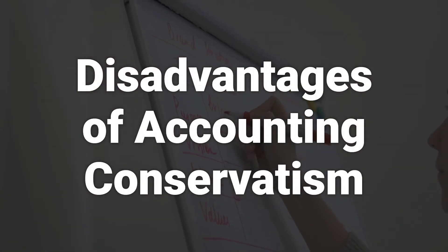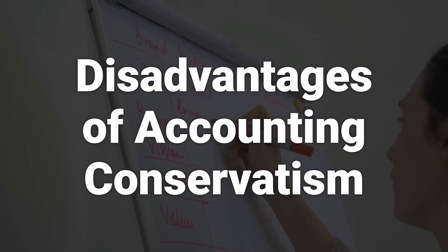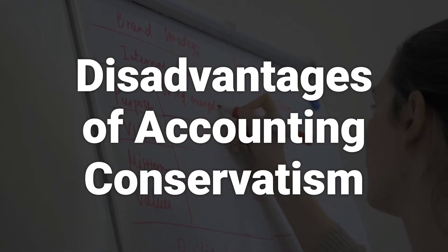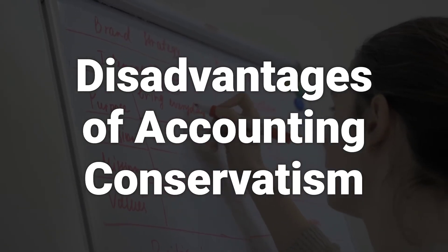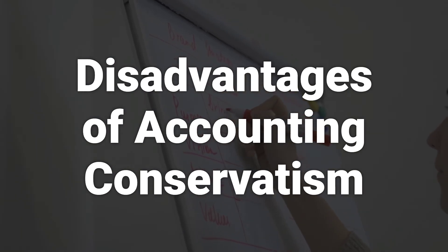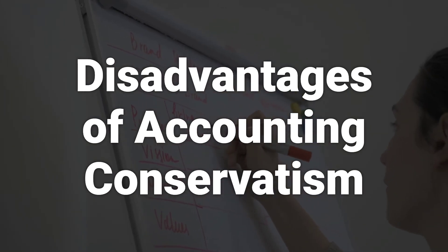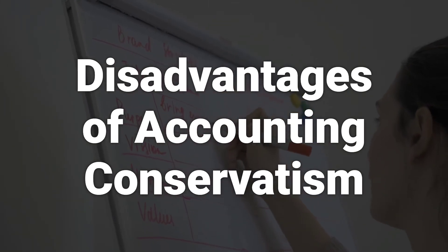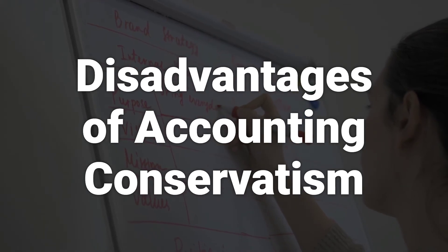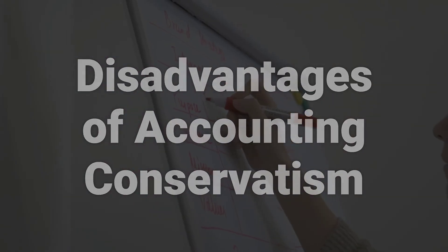GAAP rules such as accounting conservatism can often be open to interpretation, allowing some companies to manipulate them to their advantage. There is also the potential for revenue shifting, making it difficult for organizations to track business operations internally.